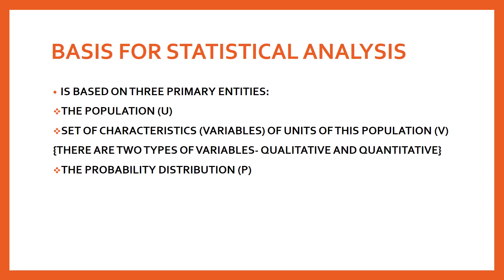An example of ordinal: one person says their pain is mild, another says moderate, another says severe. You classify or categorize these into an order - mild, moderate, or severe. So the stage of disease or pain level is ordinal. Quantitative is numerical, with two types: discrete and continuous.